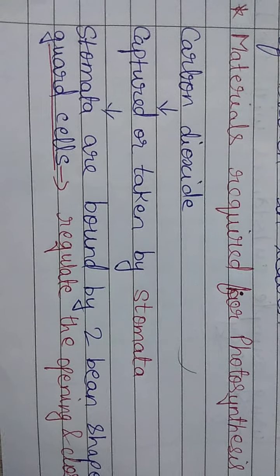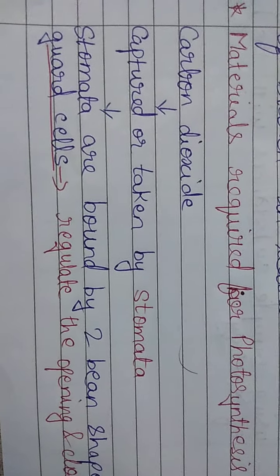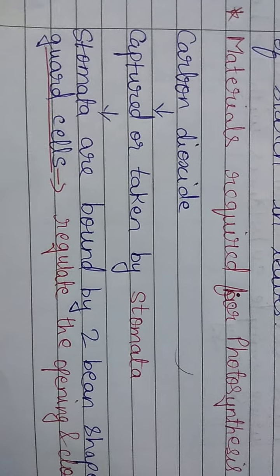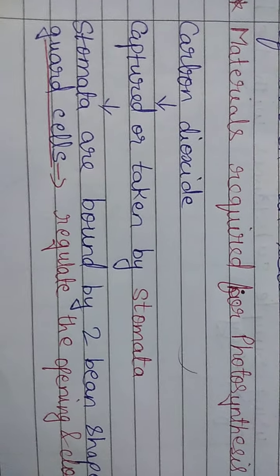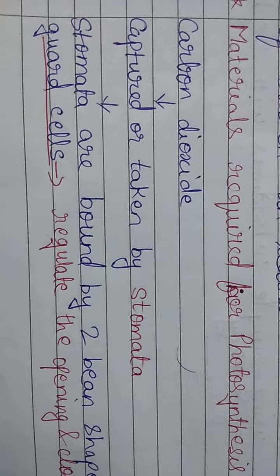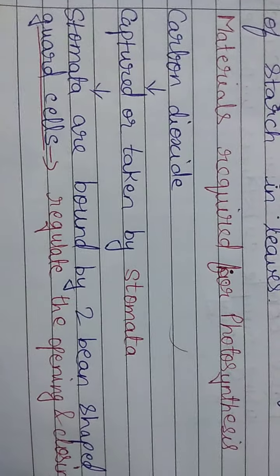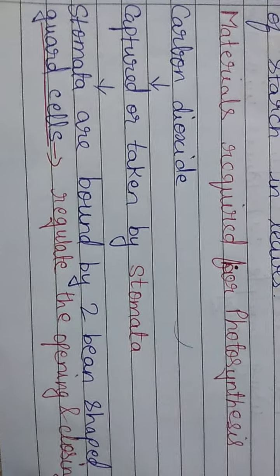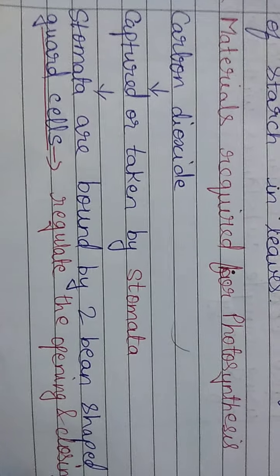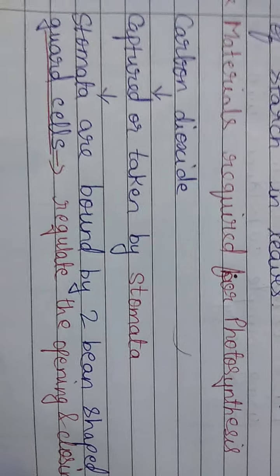How is carbon dioxide taken by the plants? They take carbon dioxide present in the air through stomata. Stomata are responsible for capturing or taking the carbon dioxide present in the air. Stomata are tiny pores present on the leaves of the plant — you can see them in the figure as well.